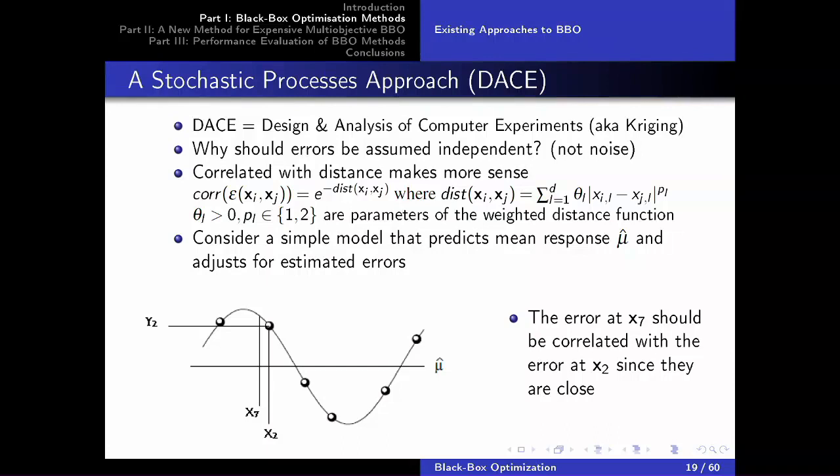One of the most popular approaches is called DACE — Design and Analysis of Computer Experiments — a stochastic process approach. The fundamental idea is that assuming errors are independent doesn't make sense; errors should be correlated with distance. If my model underestimates at x2, and a new point x7 is very close to x2, the model is probably still underestimating there. So the correlation between errors depends on the distance between points.